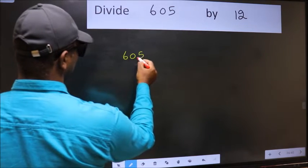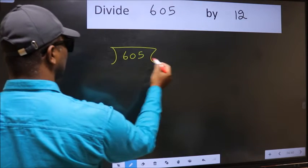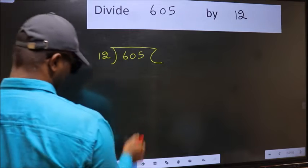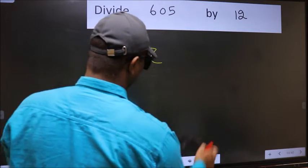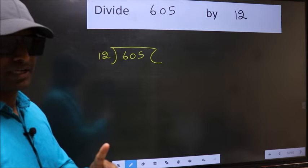Let's take 605 and 12 here. This is your step 1.